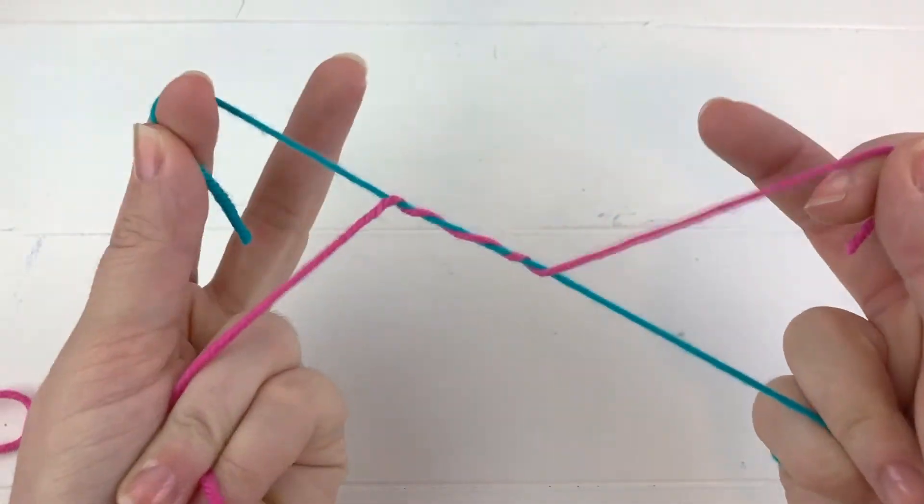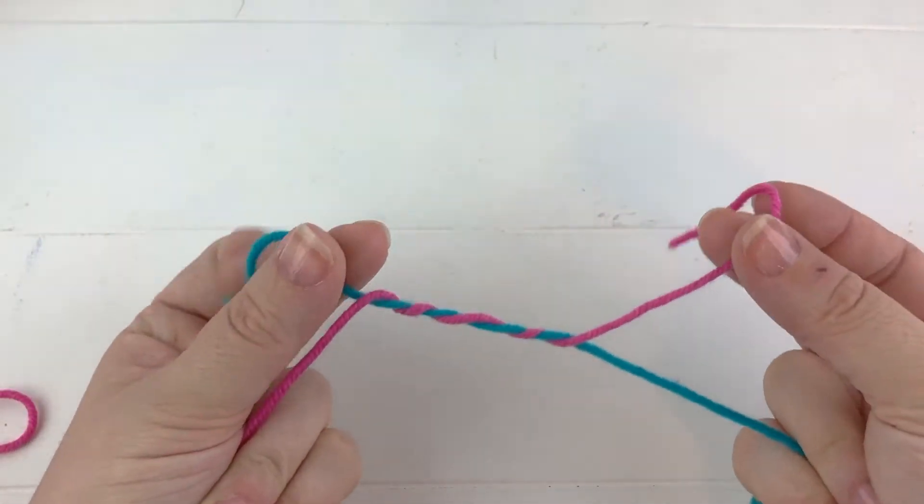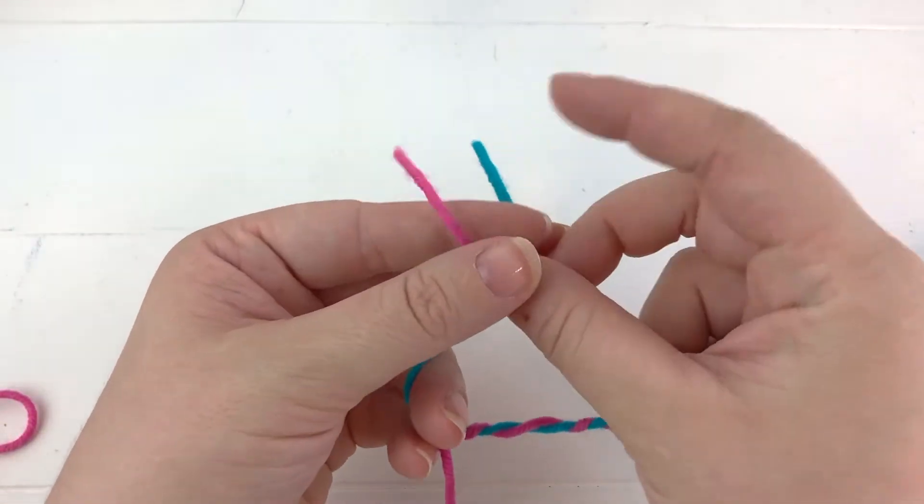Then pull on the two small ends to pull the knot together, and then just cross over the two small ends and pull one through the center hole.